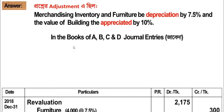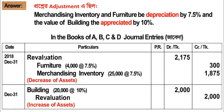For the revaluation journal entry: Revaluation account debit, Furniture credit, Merchandising Inventory credit. Furniture: 3,500 and Merchandising Inventory: 85,500, equal to 85,500. For building appreciation: Building debit, Revaluation credit, 10 percent — 2,000.